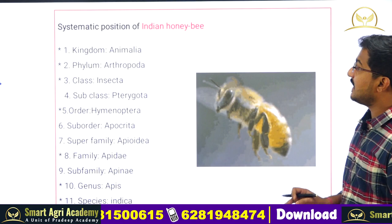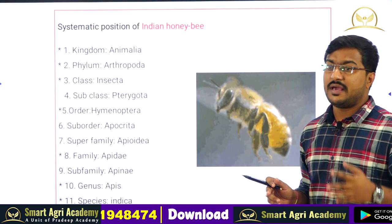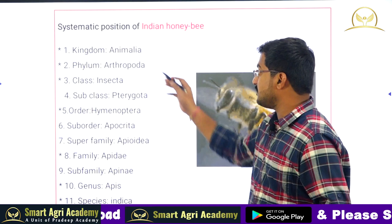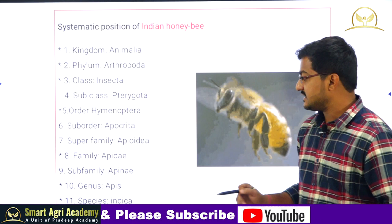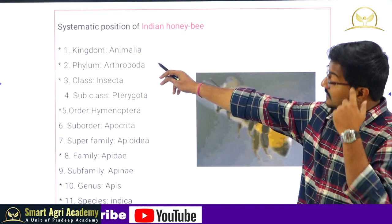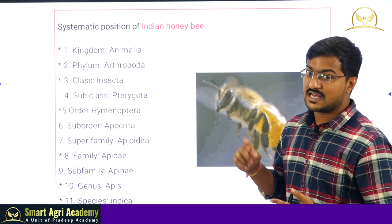Coming to the systematic position of the Indian honeybee: this example is used to explain how systematic position proceeds for different insects. The chronological order is kingdom, phylum, class, subclass, order, suborder, superfamily, family, subfamily, genus, and species. The star-marked names are the obligate taxa which are compulsory for each insect classification. The kingdom of the Indian honeybee is Animalia, phylum Arthropoda, class Insecta, subclass Pterygota, order Hymenoptera, suborder Apocrita, superfamily Apoidea, family Apidae, subfamily Apinae, genus Apis.